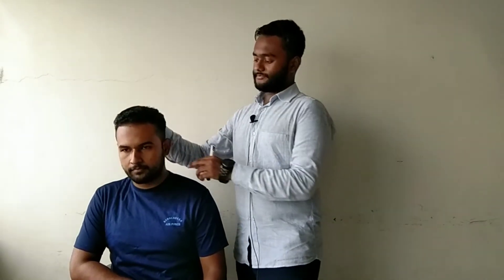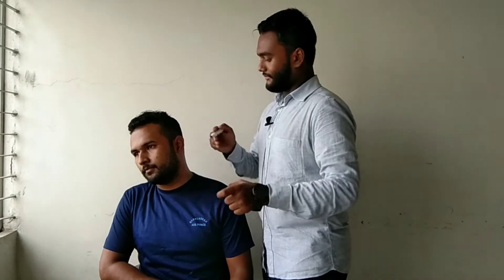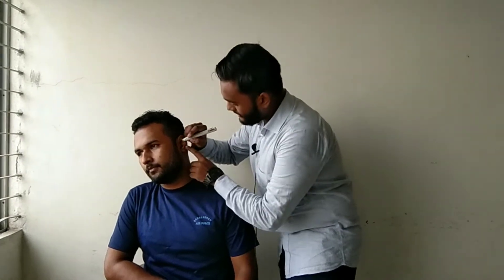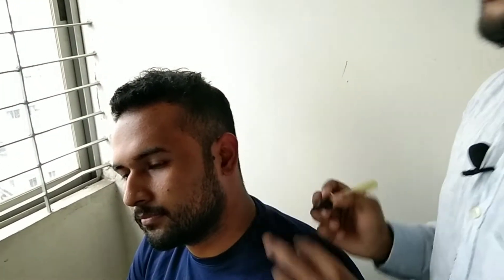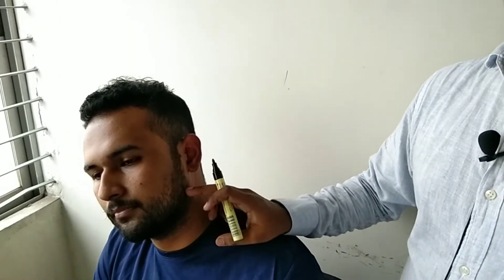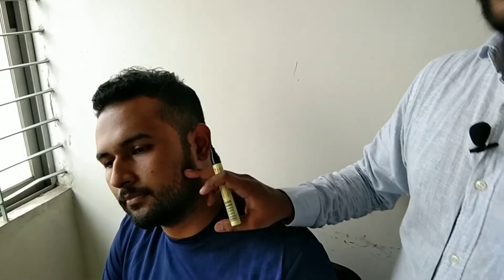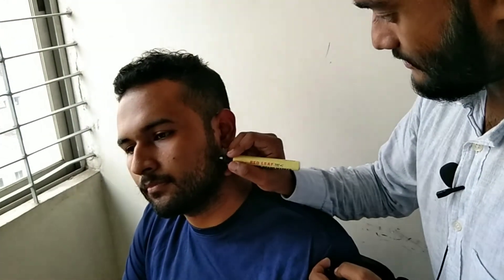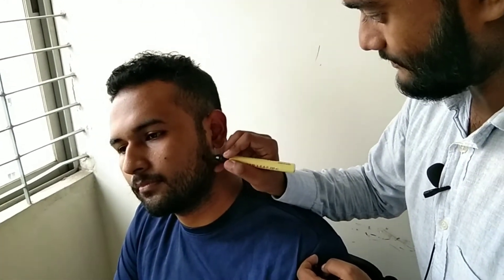We are going to show the parotid gland. For the parotid gland, the first point is at the head of the mandible. The second point is the masseter muscle — the center of the masseter muscle is the second point.